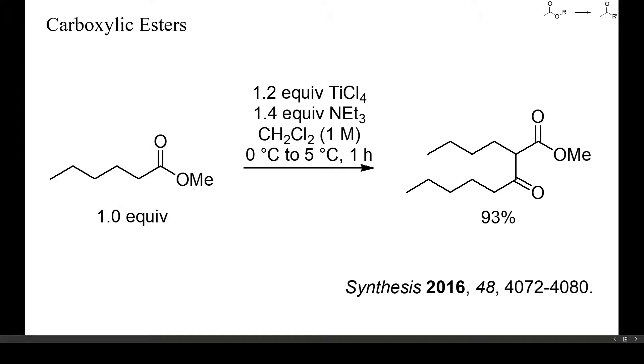If a given ester contains base-sensitive functional groups, one alternative is Claisen condensation of a titanium enolate. These can be generated from titanium tetrachloride without the use of strong bases, as shown here. These reactions usually only work well in non-coordinating solvents, such as dichloromethane.